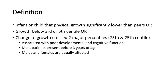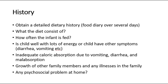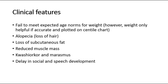Most patients present before three years of age, and males and females are equally affected. For history taking, obtain a detailed dietary history including a food diary over several days: what the diet consists of, how often the infant is fed, whether the child is well with lots of energy, or has other symptoms such as diarrhea or vomiting. Also assess inadequate caloric absorption due to vomiting, diarrhea, and malabsorption, growth of other family members, any illnesses in the family, and any psychosocial problems at home.